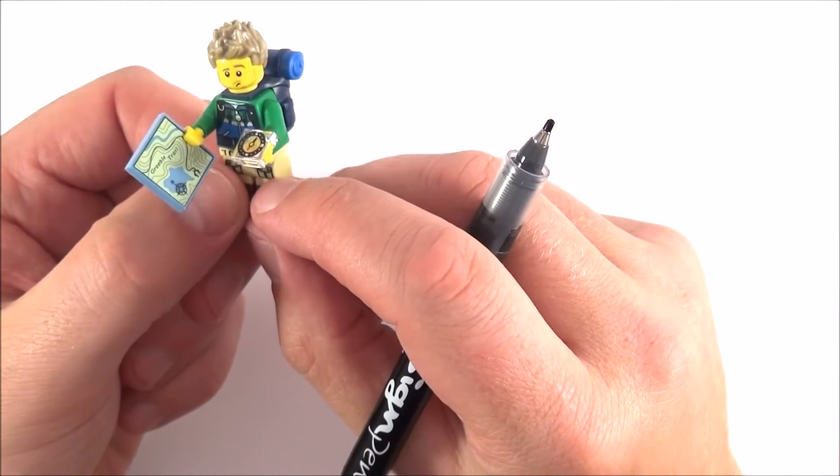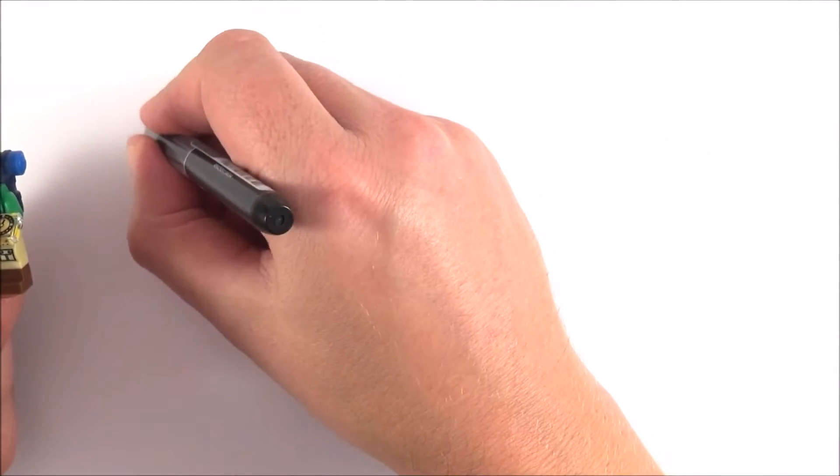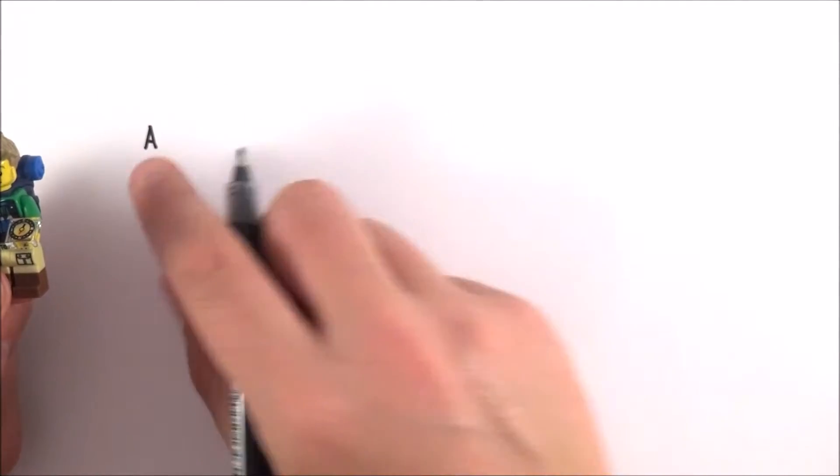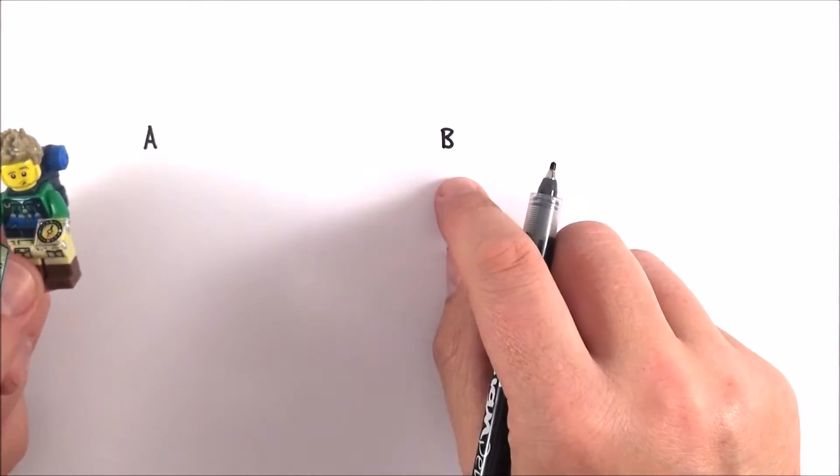So here we have a student perhaps doing their Duke of Edinburgh award and what they're going to do is they're going to start at their camp which is at point A and they're then going to move to their new overnight camp at point B.